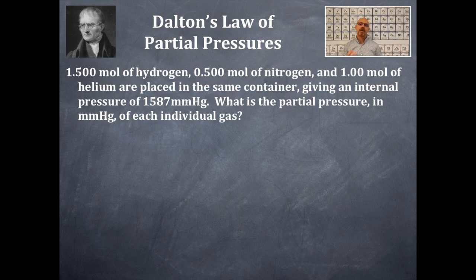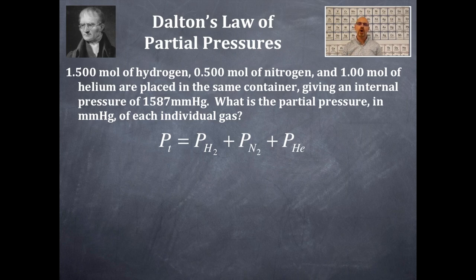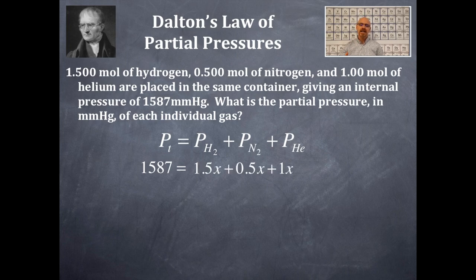I know the amount of each gas and I know the total pressure. P-total is equal to the partial pressure of hydrogen, plus the partial pressure of nitrogen, plus the partial pressure of helium. I've got the mole values of each of these, so: 1.5 times x for hydrogen, 0.5 times x for nitrogen, and 1 times x for helium.